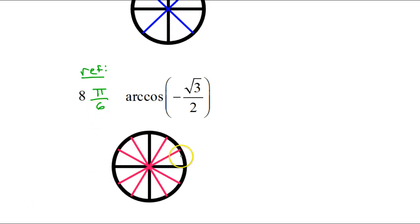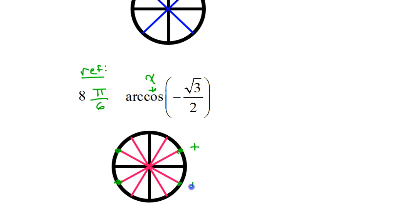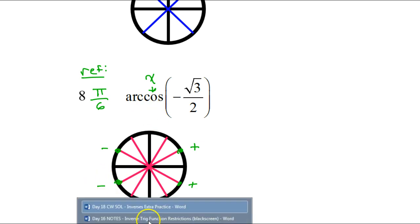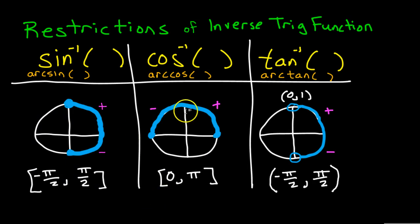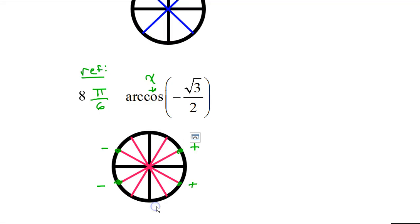Since the reference angle is pi over 6, and these are all pi over 6's on the unit circle, these are the four angles that have a reference angle of pi over 6. All of these are going to give me some kind of radical 3 over 2. However, cosine is the x coordinate on the unit circle, and arc cosine is only defined for the top half of the unit circle. So I can forget about the ones down here on the bottom.